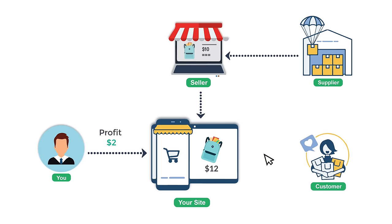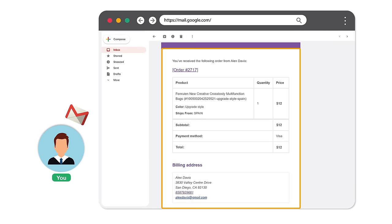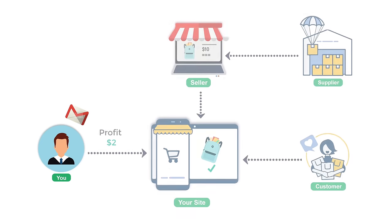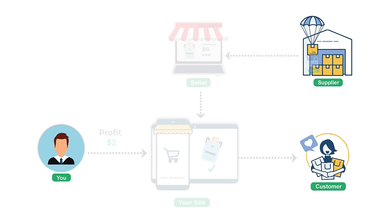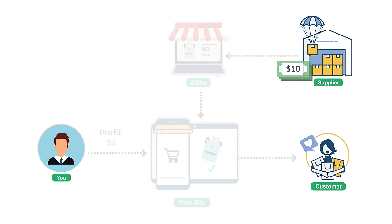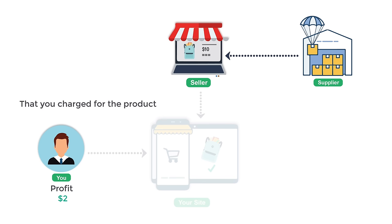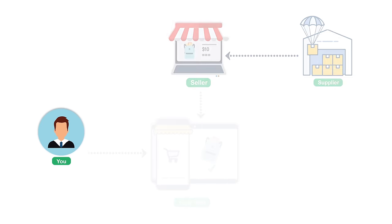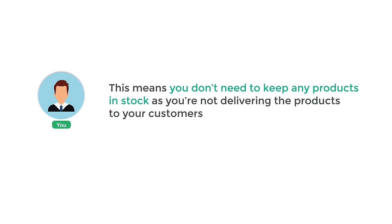Anyone visiting your site will be able to purchase this product. Once the customer purchases the product, we'll be able to receive an email with the order details. And once you receive an order, instead of delivering the product yourself, we'll see how you can pass this order to the supplier and pay them the actual amount they charge. The seller will deliver the product to your customer, and you can keep the extra amount as profit. This means you don't need to keep any products in stock.